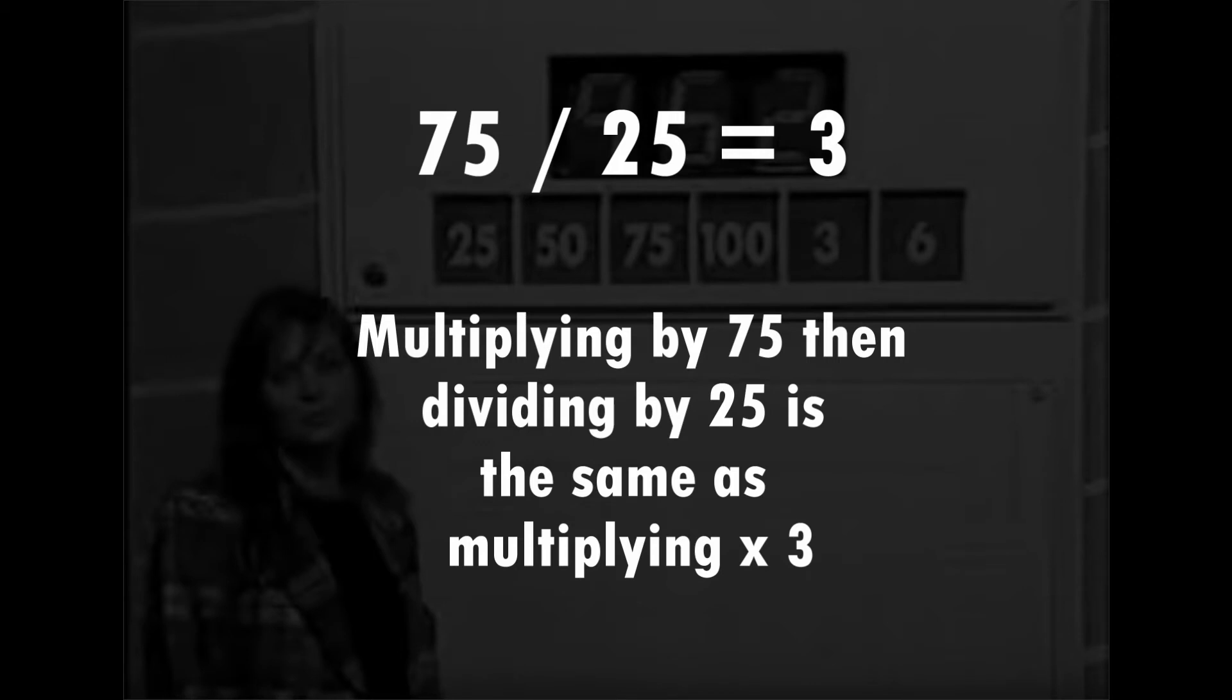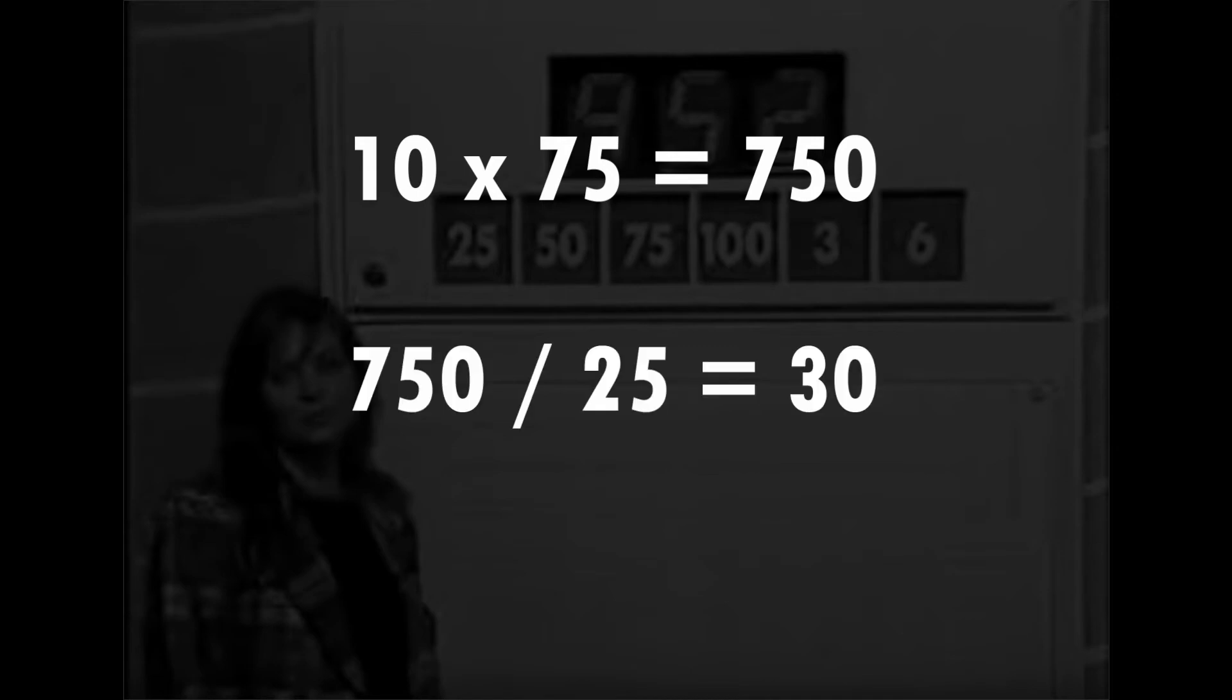To show you an example of that, if we start with the number 10, 10 multiplied by 75 is 750. If we divide that by 25, then our result is 30, and 10 multiplied by 3 is also 30.